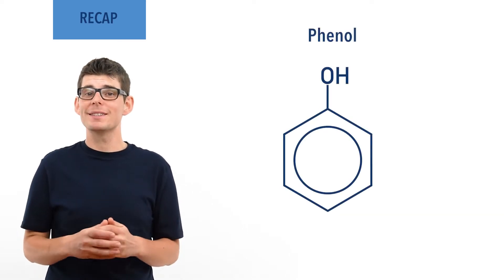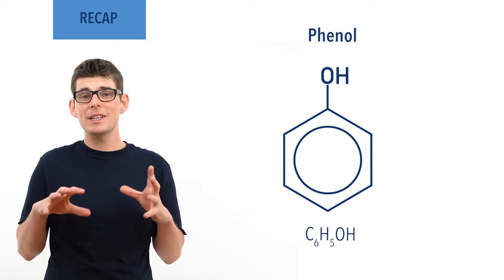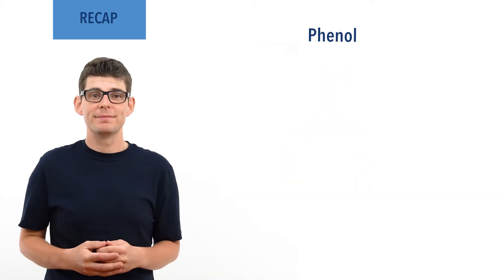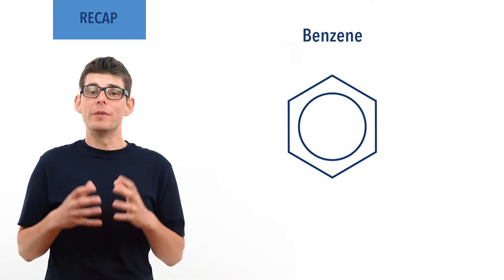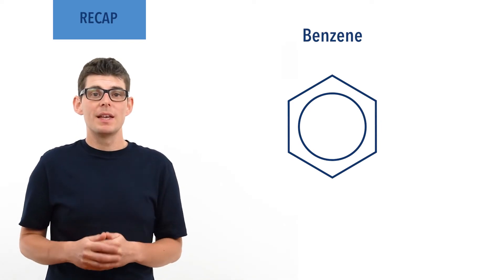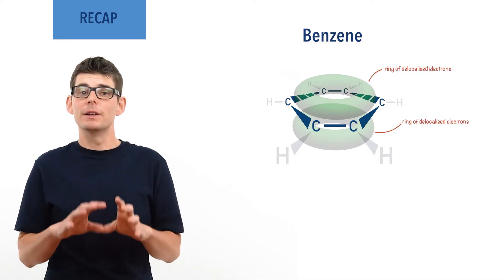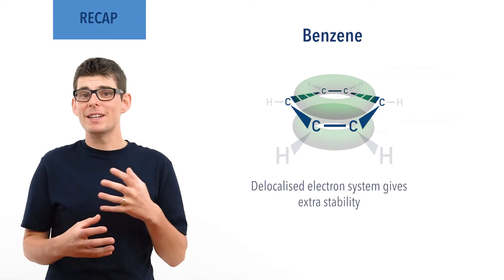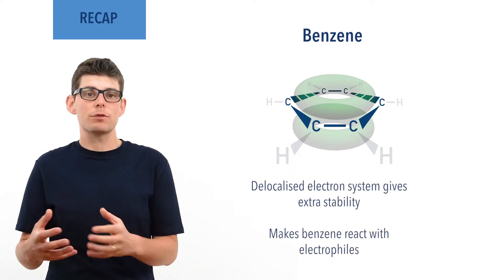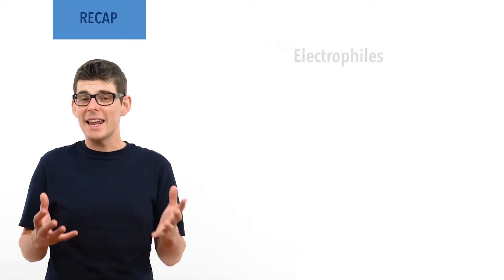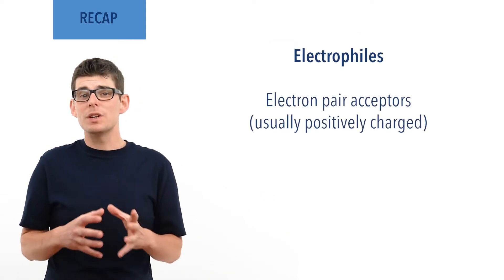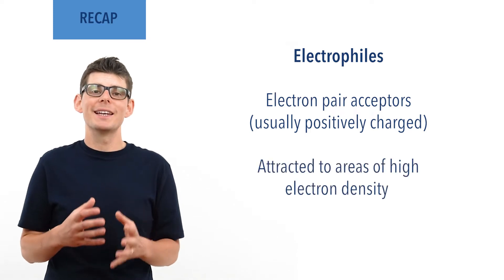Before we talk in detail about the bromination of phenol there are a few essential ideas you need to be comfortable with. Phenol is a cyclic compound with the formula C6H5OH — it is essentially a benzene ring with an OH group attached. Benzene is a cyclic hydrocarbon with a delocalized electron ring. There is a pi bonding system where delocalized electrons exist in rings above and below the plane of the carbon ring, giving benzene its relative stability and explaining why benzene reacts with electrophiles. Electrophiles are electron pair acceptors; they are usually positively charged and are attracted to areas of high electron density.